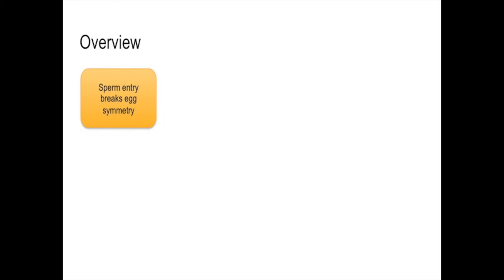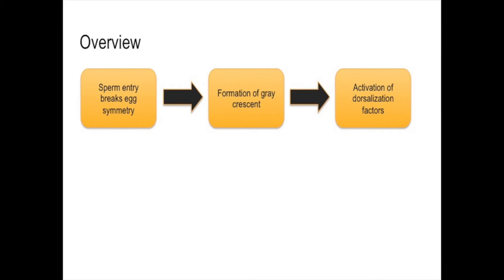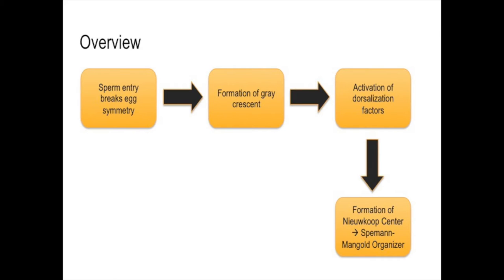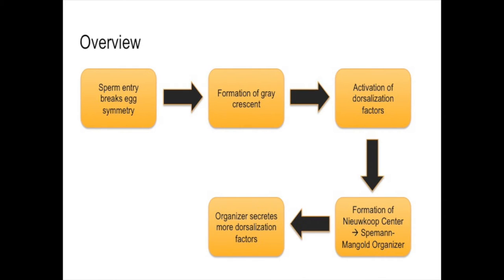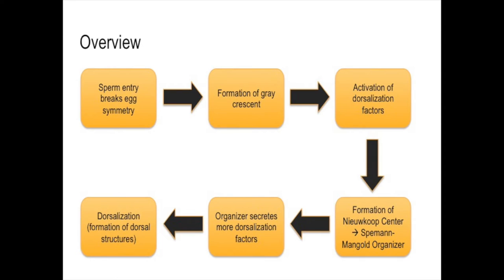A quick overview on how cortical rotation influences dorsalization in Xenopus. A symmetry breaking event occurs, which is the fertilization of the Xenopus egg. Through the movements of that egg, a gray crescent is formed, which then activates dorsalization factors. These dorsalization factors lead to the formation of the Nieuwkoop Center and the Spemann-Mangold organizer. This organizer then secretes even more dorsalization factors, causing the dorsalization of the embryo. One of the earliest structures indicating that dorsalization has been completed is the formation of the blastopore lip.